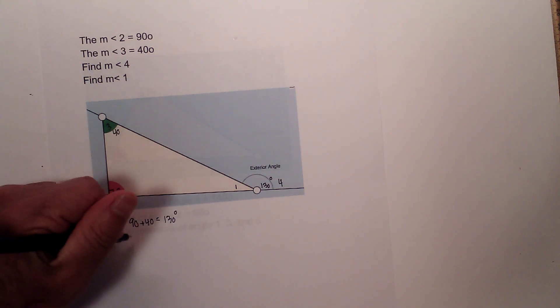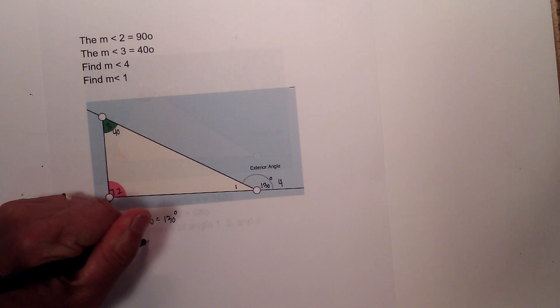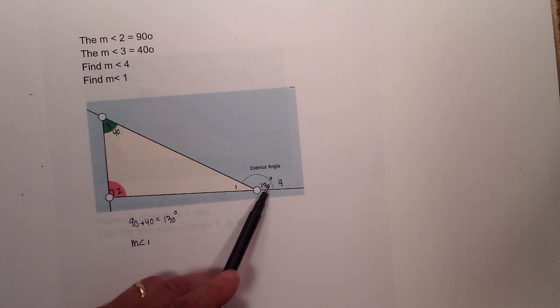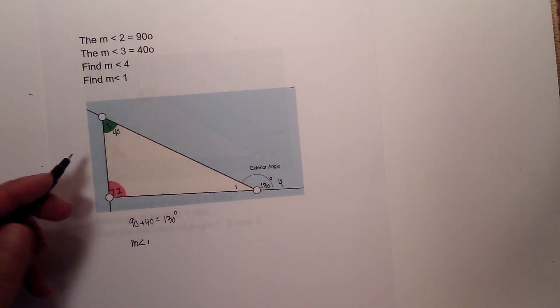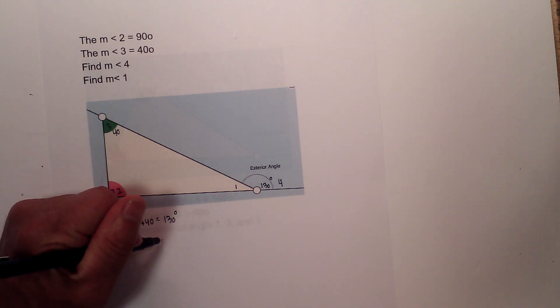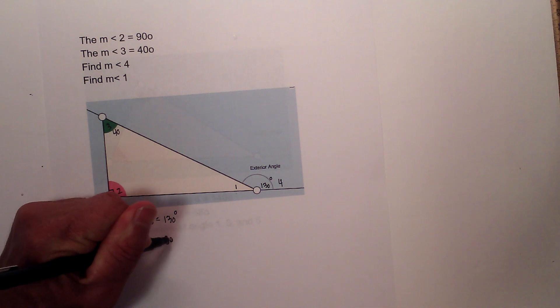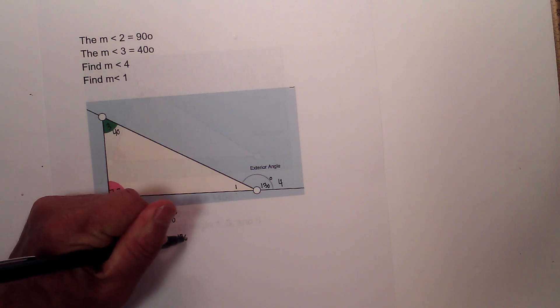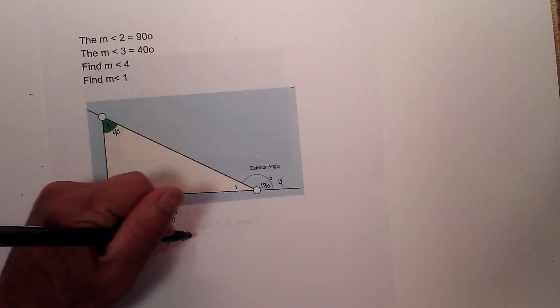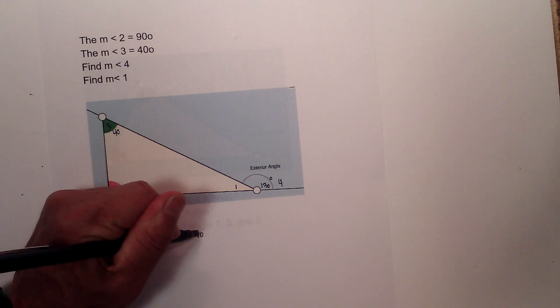Now how about angle 1? These two angles would be supplementary because there is a straight line. These would be supplementary which is equal to 180 degrees. So it would be 180 minus 130, which is equal to 50 degrees.